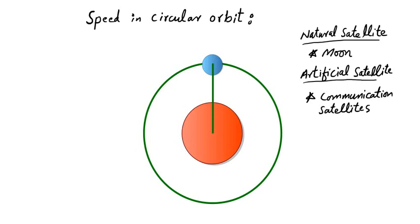An example of a natural satellite in our solar system is the moon, revolving around the Earth. We also have artificial satellites, which are generally sent for communication purposes — we call these communication satellites. The best example of that is geostationary satellites.